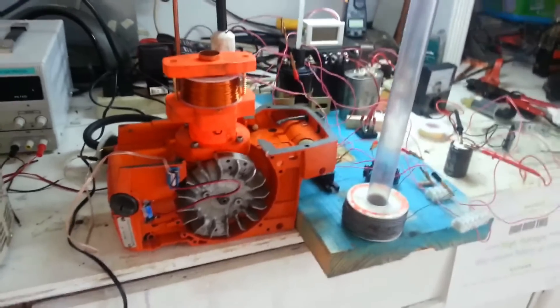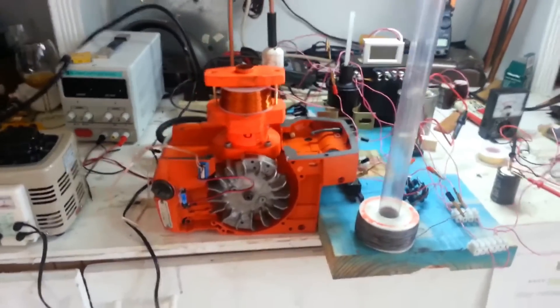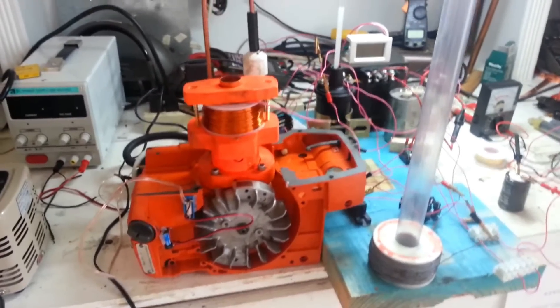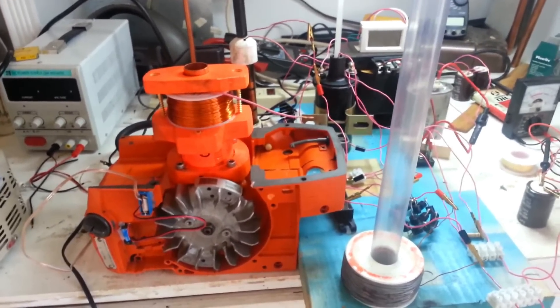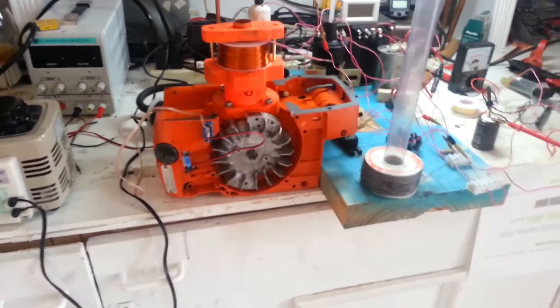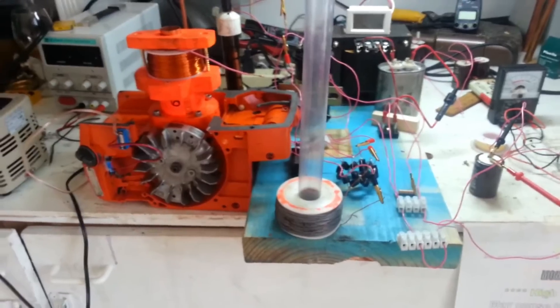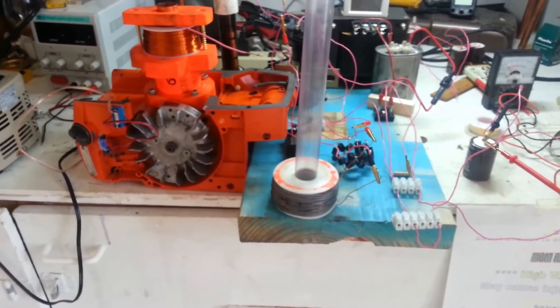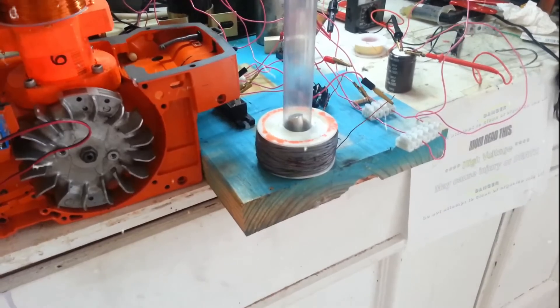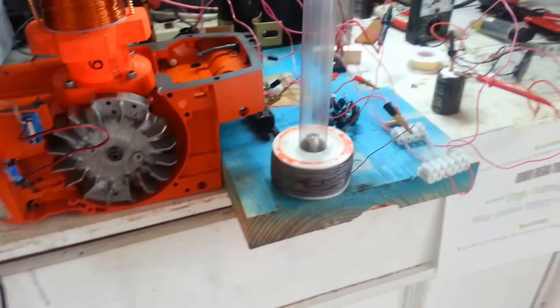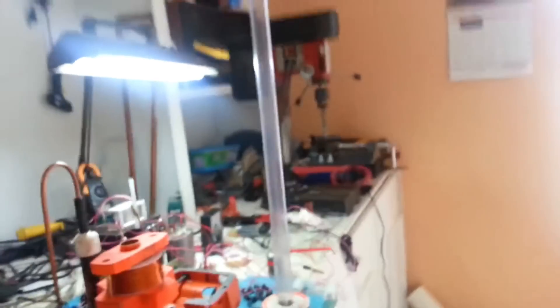However, many believe that the real motive behind the raid was to prevent the technology from reaching the public and disrupting the status quo. Undeterred, Gray fought back, launching a series of legal challenges against the government's actions. He argued that his invention was a breakthrough in the field of energy generation, and that the public had a right to access this technology. However, the legal battle proved to be an uphill struggle, as Gray faced a well-resourced and determined opposition.